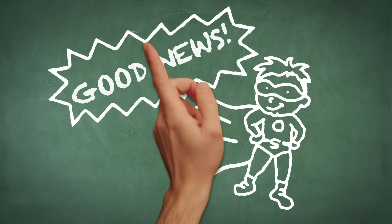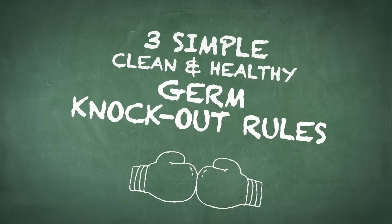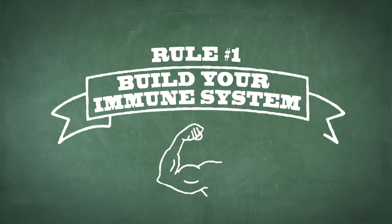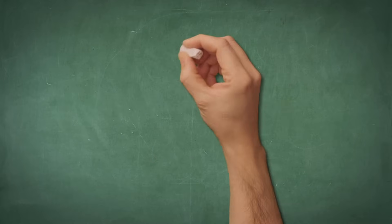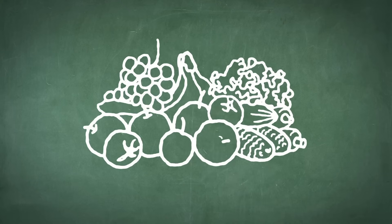By following these three simple clean and healthy germ knockout rules. Number one: build your immune system. A healthy body is a strong body. Always eat lots of veggies and fruit to build your immune system to protect yourself if and when a germ attacks your body.